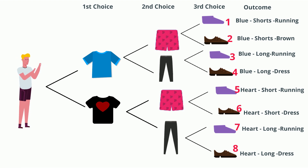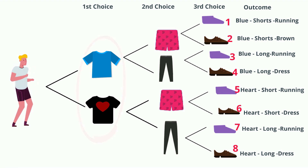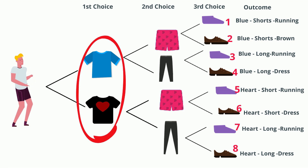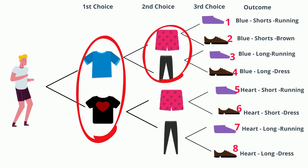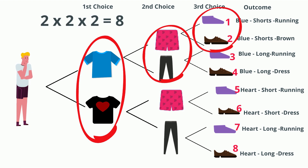Or an easier way: you can get the total number of choices at each level and multiply these together. First choice, you have two choices — blue or black. Second choice, you have two choices — short or long. And the third choice, you have two choices — running or dress. Multiply these together and you get 8.